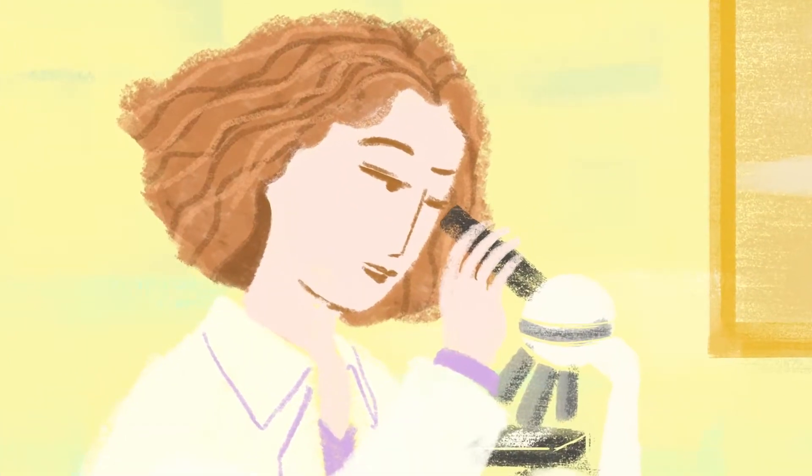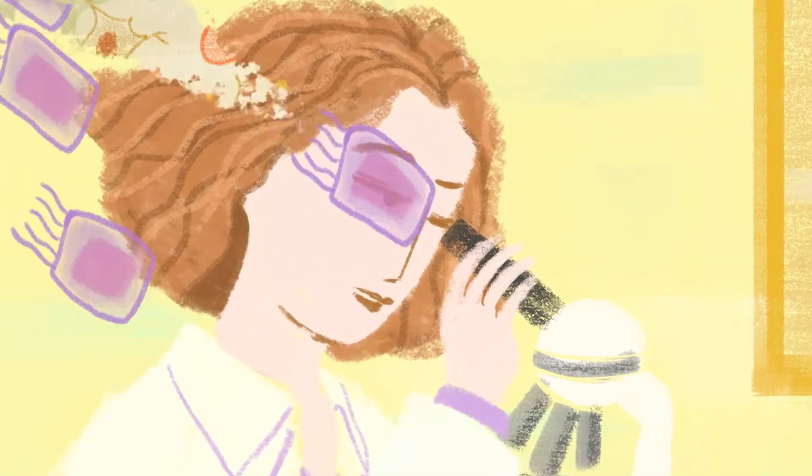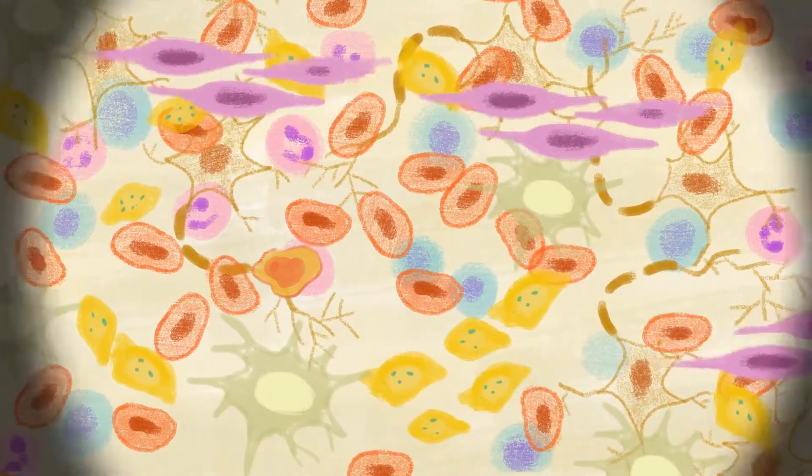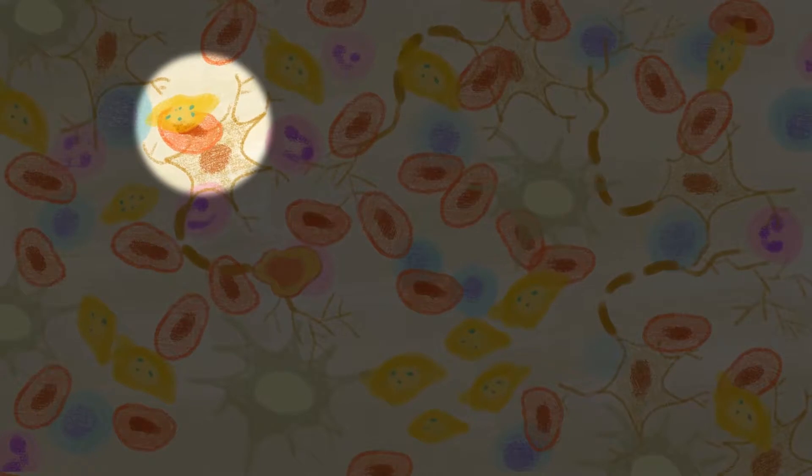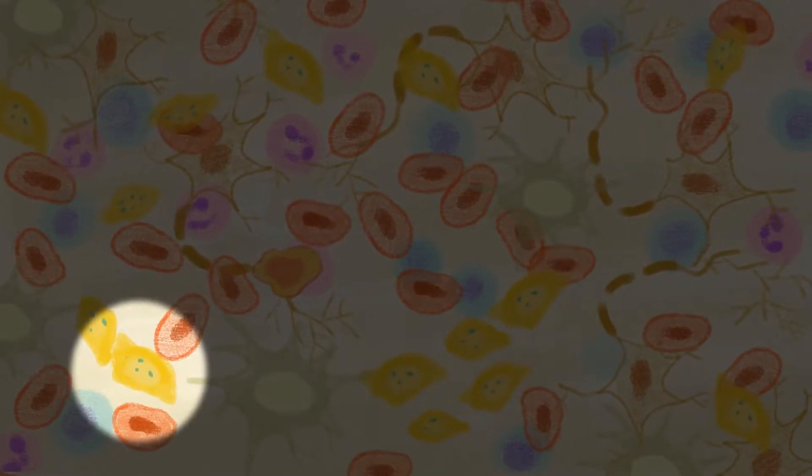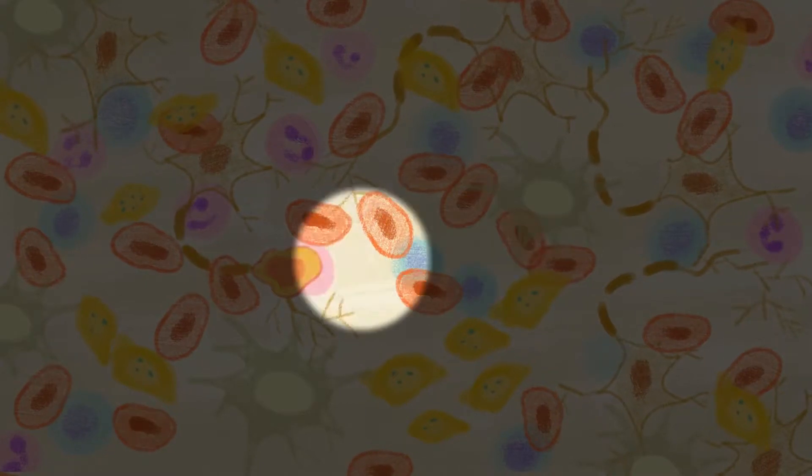Cancer cells are very good at avoiding detection. They can often be found hiding in plain sight because they are our own cells that have gone bad. Cancer cells have the ability to block immune cells from seeing them. This makes it difficult for our immune systems to find and destroy the rogue cells.